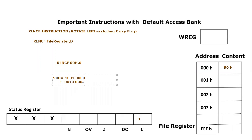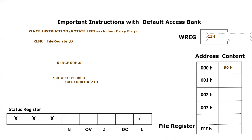The vacant place is filled by the bit coming from the most significant side — the bit that went out takes its position on the right. So the value is rotated towards left, and converting the result into hex it becomes 0x21. This is the result of rotating 0x90 left while excluding the carry flag, and the result 0x21 goes into the working register.